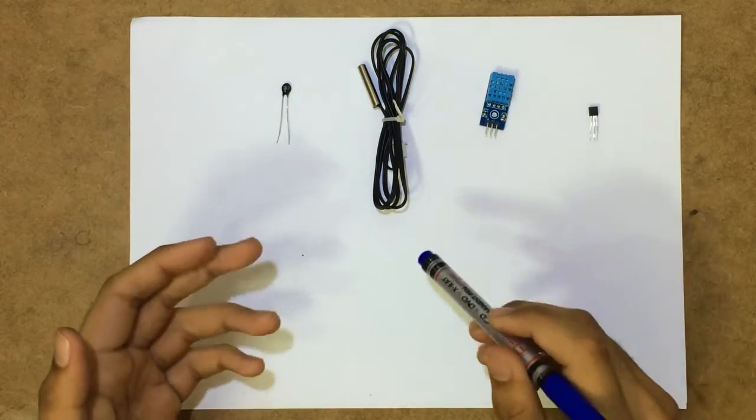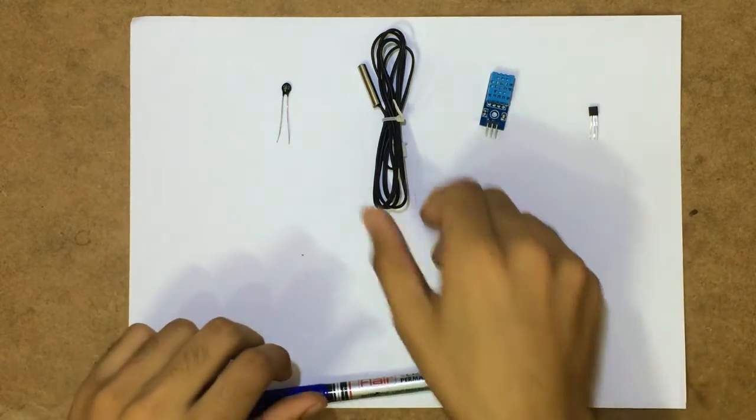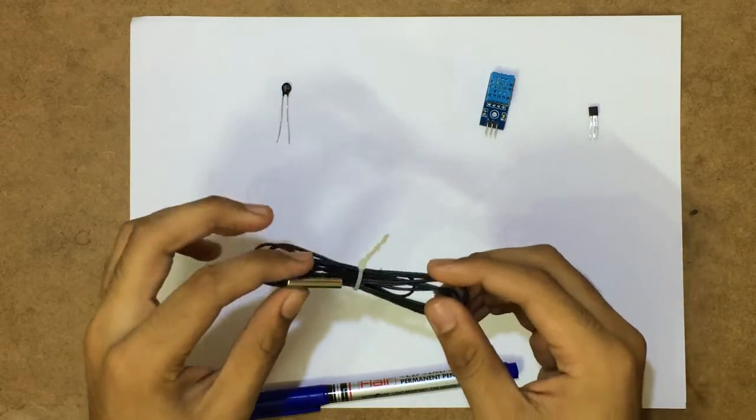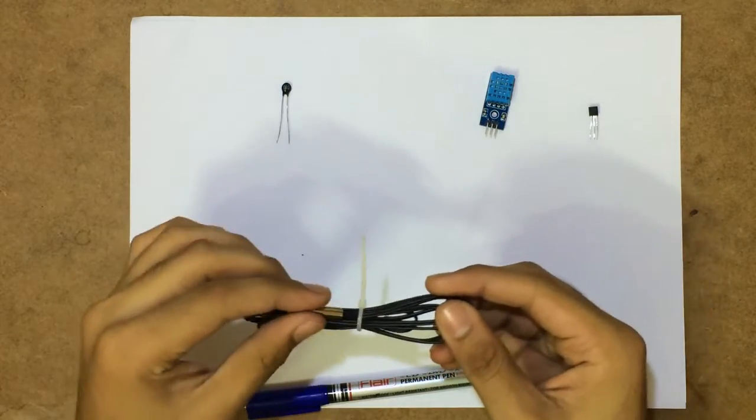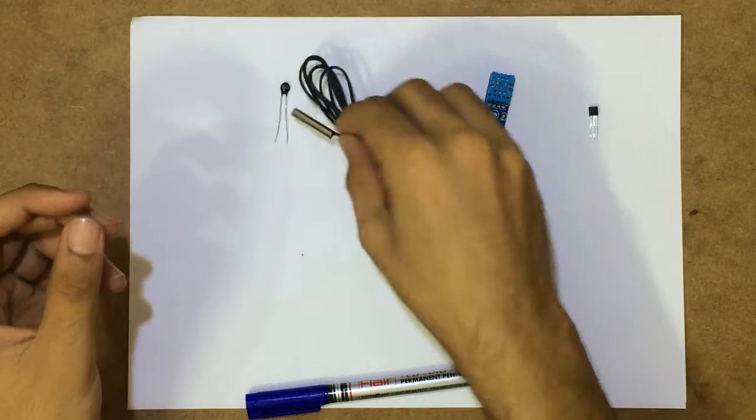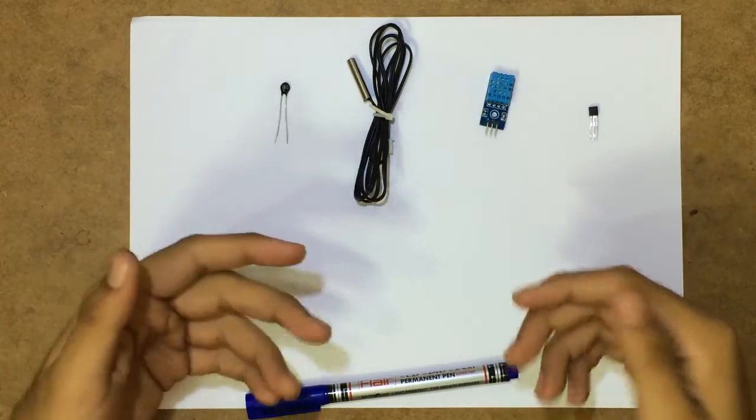This is a thermocouple. This is made up of two different kind of metals which are joined on this thing, the probe. And the voltage across this thing also varies as the temperature varies.